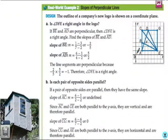So, this is a company's logo. They want to know a few things. They want to know is DBE, is that a right angle? So, all we have to do is find the slope of DA, the slope of BE, and see if this is perpendicular because perpendicular means right angle. So, they do that math right there and they get negative 2 fifths, 5 halves. Those two are opposite and reciprocal. So, we have a right angle.